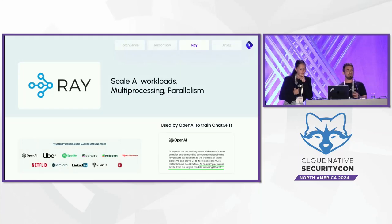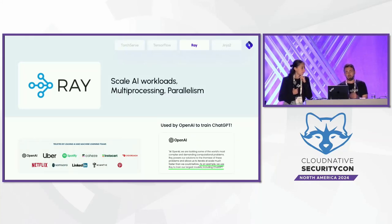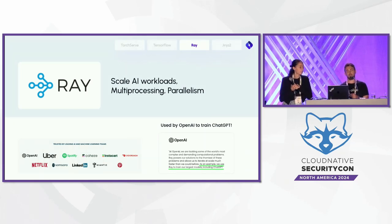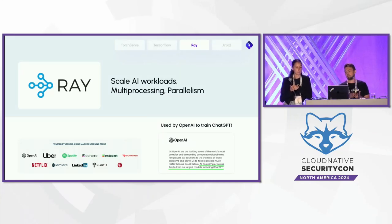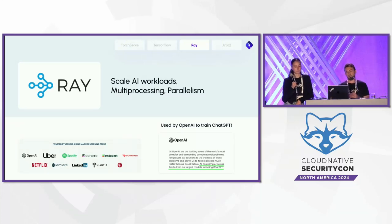What is Ray? Ray is essentially like Kubernetes for AI — a generic job runner to scale AI workloads for training, inference, or data processing pipelines. Some of you might think of it as a replacement for the multiprocessing module in Python. It's very convenient and changed the way I personally work with Python. It's used by the largest organizations out there, including OpenAI, who say out loud they use Ray to train ChatGPT and their largest models to this day. It's literally everywhere, used by the largest companies to scale AI.